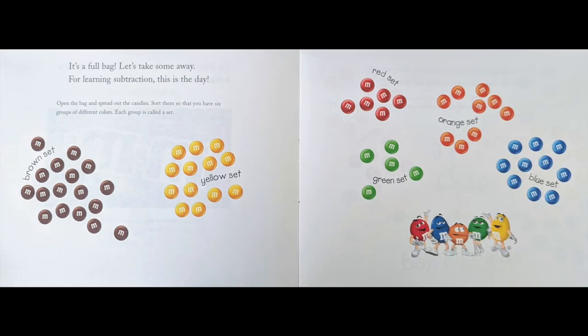It's a full bag, let's take some away. For learning subtraction, this is the day. Open the bag and spread out the candies. Sort them so that you have six groups of different colors. Each group is called a set: brown set, yellow set, red set, green set, orange set, blue set.